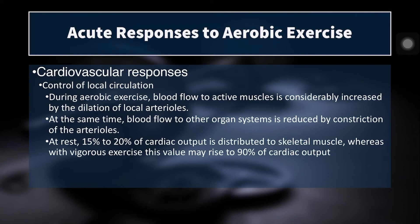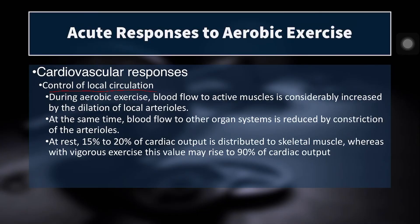Another important acute change is the control of local circulation, which essentially redirects blood flow from your organs to your working muscles. During exercise, blood flow to active muscles is considerably increased by the dilation of local arterioles — your body is rerouting blood from low-priority to high-priority areas. When you're exercising, the highest priority is the working muscles. Your heart is essentially a slave to the muscles; the more you contract that musculature, the harder your heart has to work. Blood flow to other organ systems is reduced by constriction of arterioles. At rest, only 15 to 20% of cardiac output goes to muscle; with vigorous exercise, it may be up to 90%.